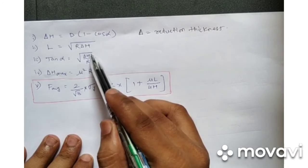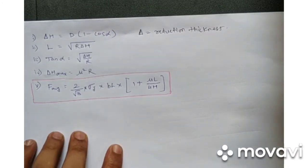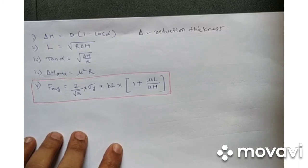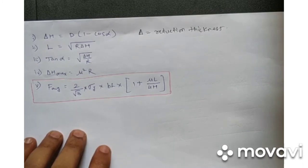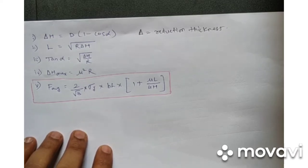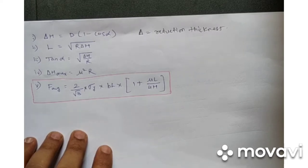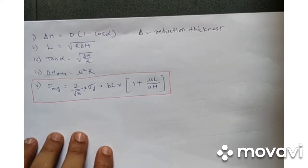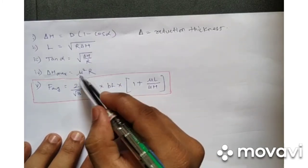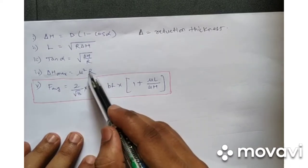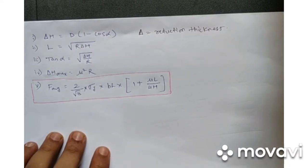An important question is how much maximum thickness reduction is possible. There is friction between the roller and the strip, and the bite angle must be maintained properly so the material can be pulled and thickness reduced. The maximum thickness reduction achievable is: delta h_max equals mu squared times R, where mu is the coefficient of friction and R is the roller radius.